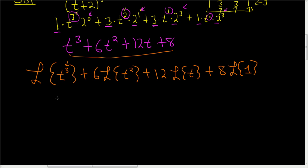So there's a 3 here, so you put a 3 factorial here, and then it's always 1 higher on the bottom, so s to the 4th, plus 6. There's a 2 here, so you put a 2 factorial up top, and it's always 1 higher, so s cubed. Plus 12, there's a 1 here, so 1 factorial, and 1 higher on the bottom, s squared, plus 8, and the Laplace of 1 is 1 over s.